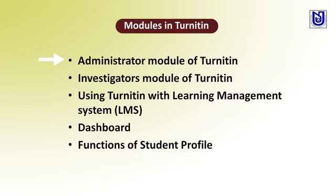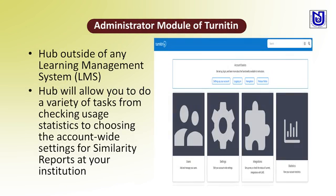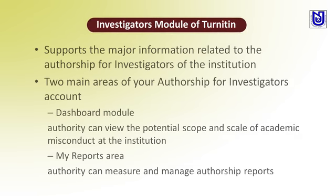Modules in Turnitin include three types: administrator module, investigator module, and integration with learning management system. The administrator module operates outside any learning management system, and the institutional administrator can generate whole reports. A flagged insight panel allows flagging users for research misconduct and authorship reporting. The investigator module supports major information related to authorship for institutional investigators, with a dashboard where authority can review the potential scope and scale of academic misconduct.